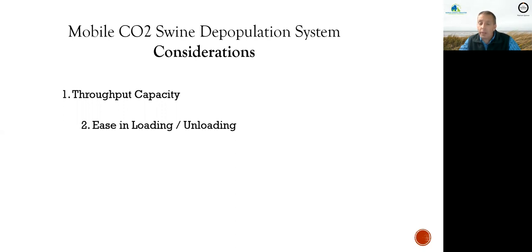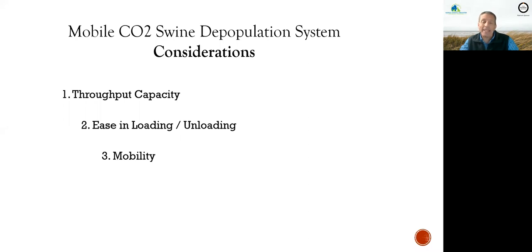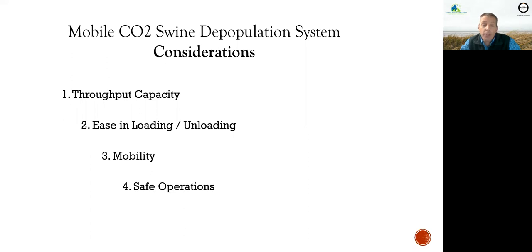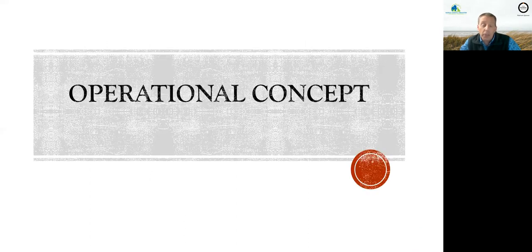We also wanted ease of loading and unloading. When you talk about market weight pigs anywhere from 260 to 280 pounds (about 113 kg), we wanted to make sure our workers weren't trying to pull one pig at a time. Third, we wanted mobility — so if it was an animal disease event, could we go on farm, depopulate, clean and disinfect the system, and then go to another farm? Finally, we wanted to ensure safe operations, because at the end of the day we wanted everyone to go home the same way they came to work.